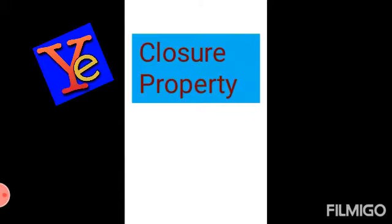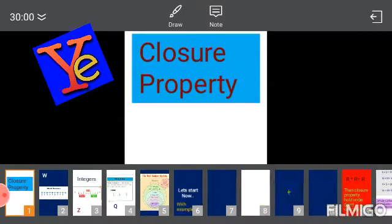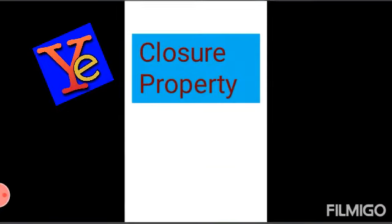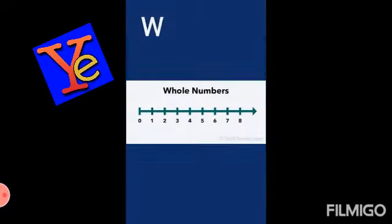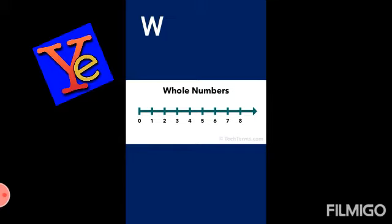First of all, before starting this property, we must know about some numbers. The first is whole numbers. Whole numbers are those numbers which include zero as well as natural numbers — that is, zero to n. The denotation symbol for whole numbers is W.